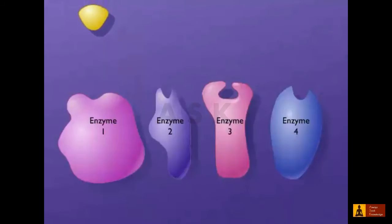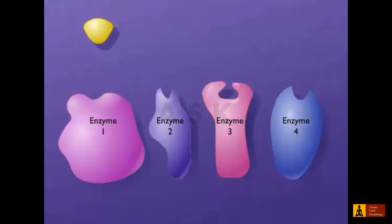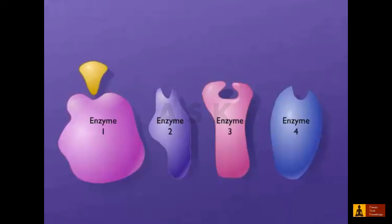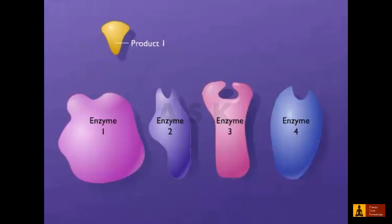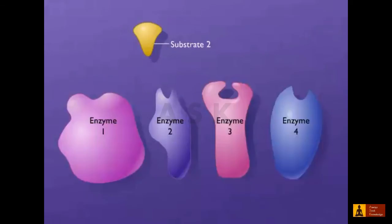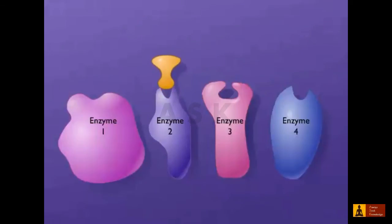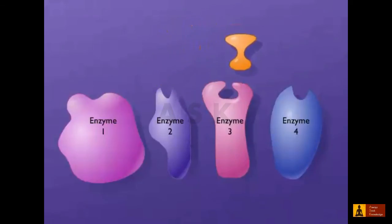In such pathways, a substrate is converted into a product by the first enzyme in the pathway, and the product of the first reaction then becomes the substrate for the next reaction. This sequence of reactions continues until the final product is made.